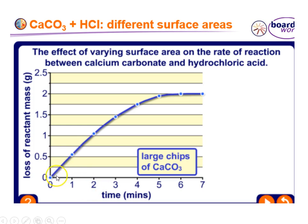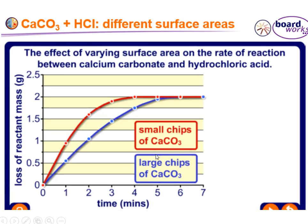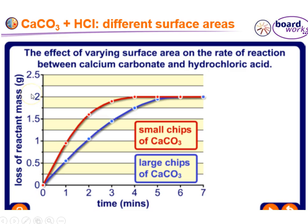Looking at the graph: for large chips, the rate is fast initially then slows down as reactants are used up. For small chips, the rate of reaction is faster — you lose more mass more quickly. This mass loss corresponds to the mass of carbon dioxide produced, so an alternative y-axis heading would be 'mass of carbon dioxide produced.'